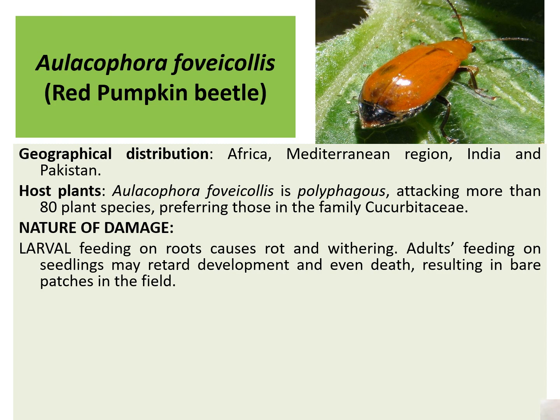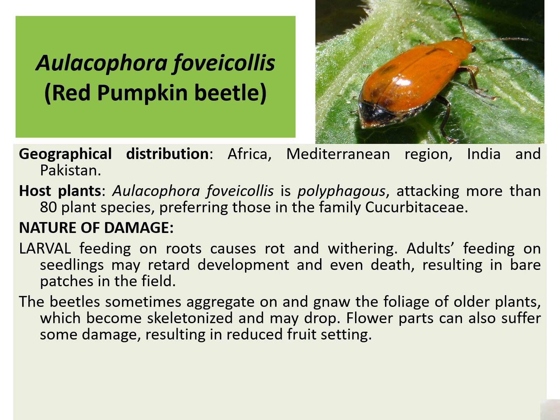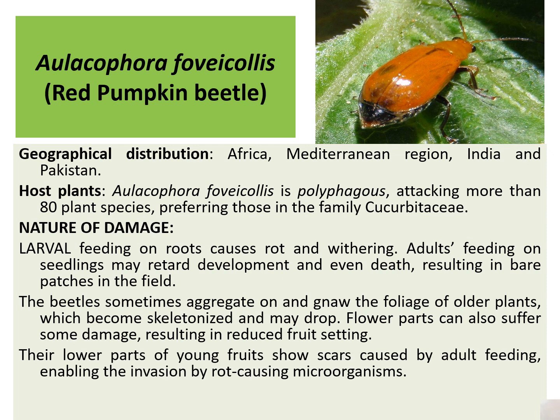Nature of damage: larval feeding on roots causes rot and withering. Adult feeding on seedlings may retard development and even cause death, resulting in bare patches in the field. The beetle sometimes aggregates on and skeletonizes the foliage of older plants, which may drop. Flower parts can also suffer damage, resulting in reduced fruit setting. The lower parts of young fruit show scars caused by adult feeding, enabling invasion by rot-causing microorganisms.